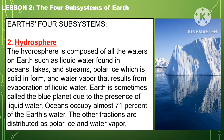Another Earth subsystem is the hydrosphere. The hydrosphere is composed of all waters on Earth, such as liquid water found in oceans, lakes, and streams, polar ice which is solid in form, and water vapor that results from evaporation of liquid water. Earth is sometimes called a blue planet due to the presence of liquid water. Oceans occupy almost 71% of the Earth's water. The other fractions are distributed as polar ice and water vapor.